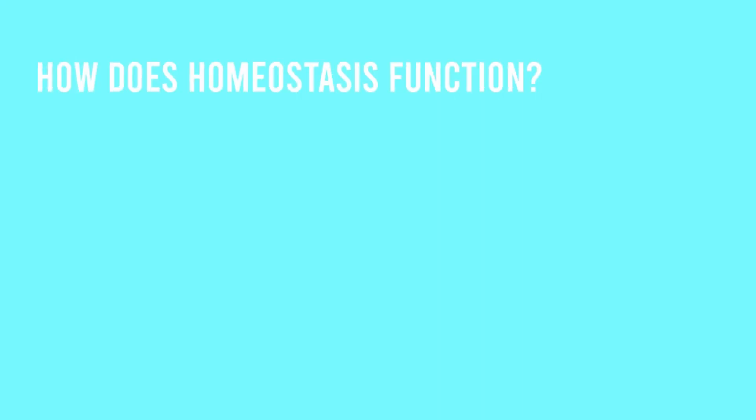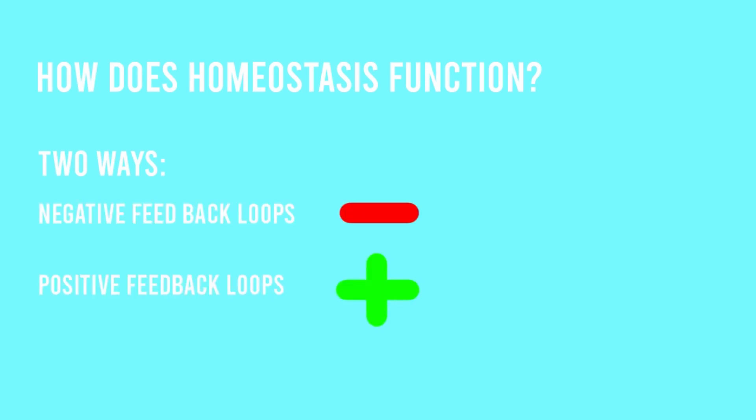So how exactly does homeostasis function? Homeostasis functions in one of two ways: negative feedback loops and positive feedback loops.